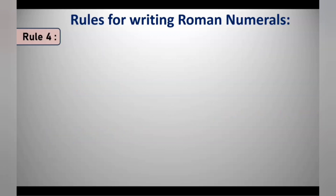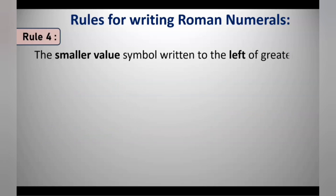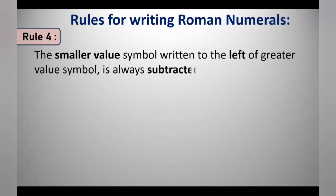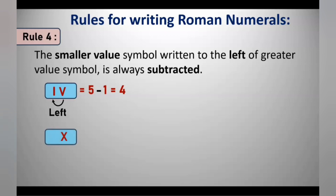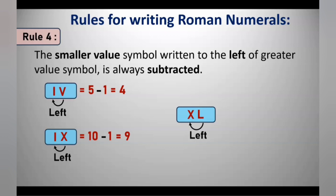Rule 4: A smaller value symbol written to the left of a greater value symbol is always subtracted. For example, writing I to the left of V gives IV, which means 5 minus 1, that is 4. Writing I to the left of X gives IX, which means 10 minus 1, that is 9. Similarly, writing X to the left of L gives XL, meaning 50 minus 10, that is 40.